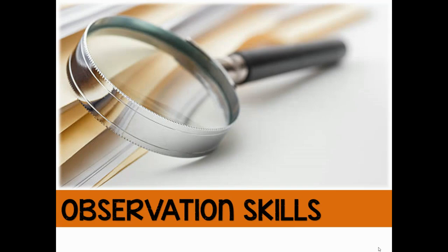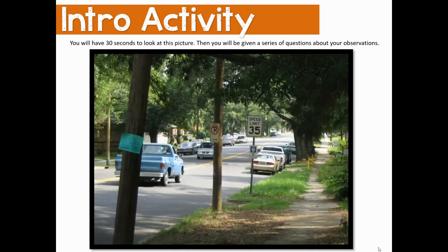Welcome back. This lesson is exciting because this is our first official forensics lesson. We are starting with our observation skills lesson. This particular unit is called Introduction to Forensics, where we talk about crime scene processing. We are taking on the role of forensic investigators, trying to understand what they do, how forensics works as a whole, and how evidence found at a crime scene can make its way into the courtroom. The very first lesson of this unit is observation skills, and we're going to start with a little observation skills activity.